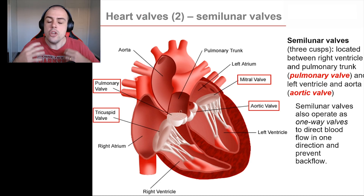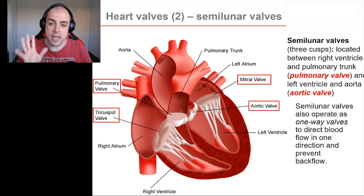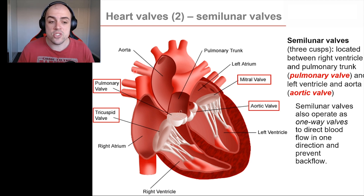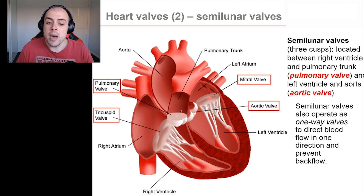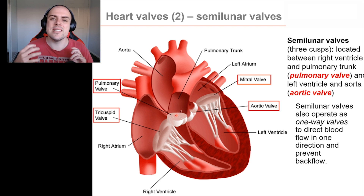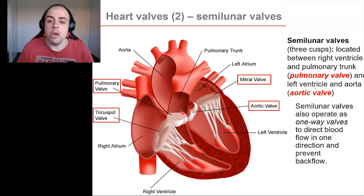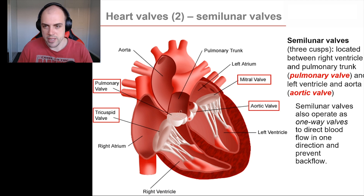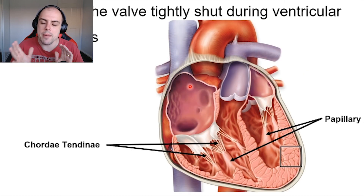The tricuspid and mitral valves are not the only valves in the heart — there are actually four main valves total. We've already discussed the tricuspid and mitral valves. The other two are called the semilunar valves: the pulmonary semilunar valve and the aortic semilunar valve.